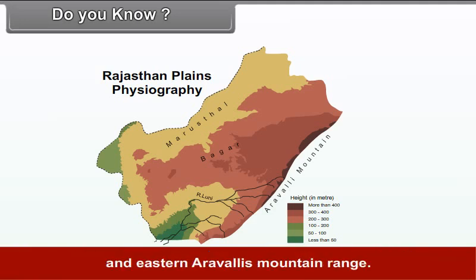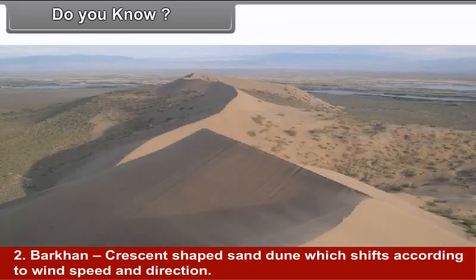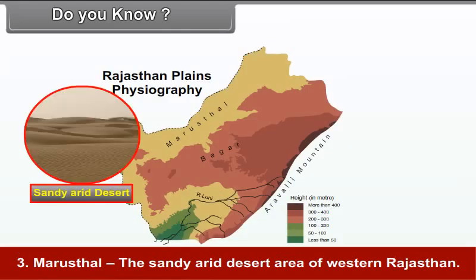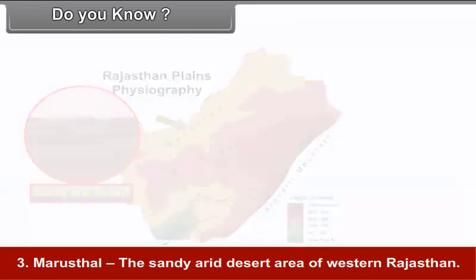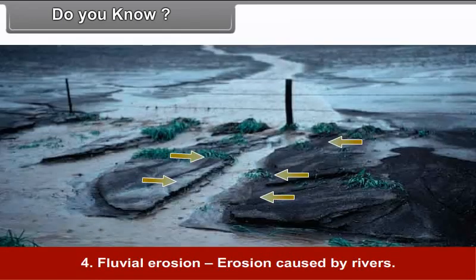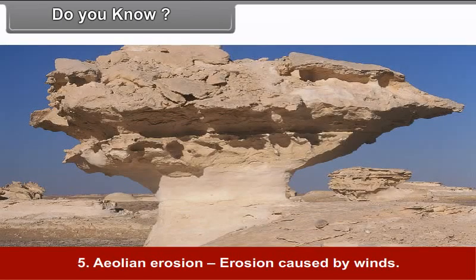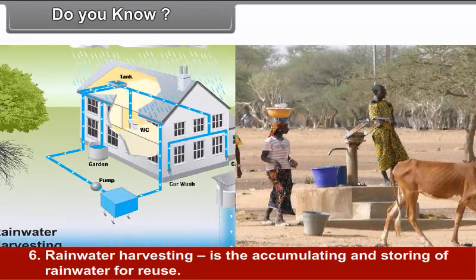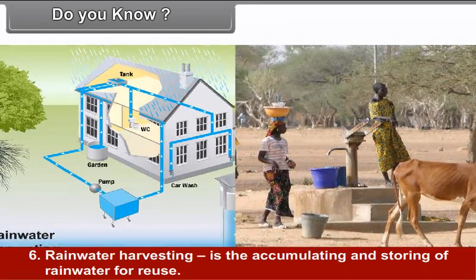Bagar is a semi-arid transitional plain region between the western sandy plains of Marustal and the eastern Aravlis mountain range — it is a plain of the Luni and Gagar rivers. Glossary: Barkhan — crescent-shaped sand dune which shifts according to wind speed and direction. Marustal — the sandy arid desert area of western Rajasthan. Fluvial erosion — erosion caused by rivers. Aeolian erosion — erosion caused by winds. Rainwater harvesting — the accumulating and storing of rainwater for reuse.